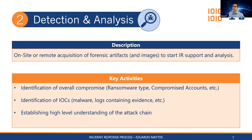In detection and analysis, we acquire as many forensic artifacts and forensic images as possible, then start incident response support and analysis. Key activities include identifying the overall compromise — the ransomware type, compromised accounts, IOCs, where the malware is and what it does, what it communicates to. We investigate the logs to see how threat actors moved around the environment and gather evidence to build a story, establishing a high-level understanding of the attack chain and tracing back to the attack vector.